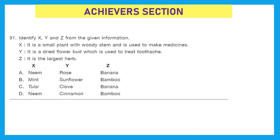Moving to our last section: the Achiever Section. These questions hold double marks, so they are very important to score high. Question 31: Identify X, Y, and Z. X is a small plant with a woody stem used to make medicine — the answer is Tulsi. Y is a dried flower bud used to treat toothache — not rose, not sunflower, but clove, which is a dried flower bud.